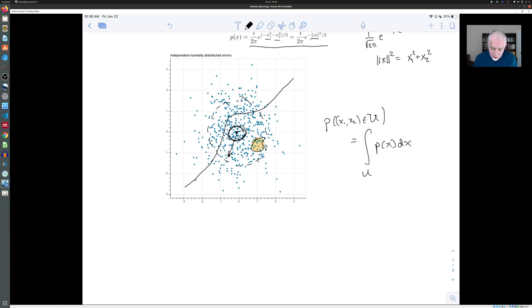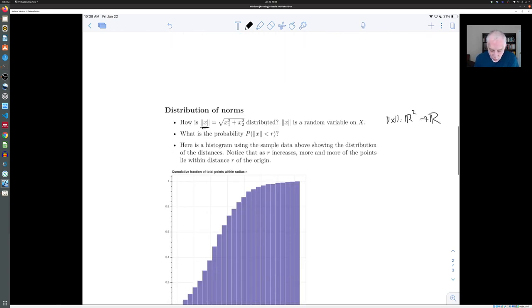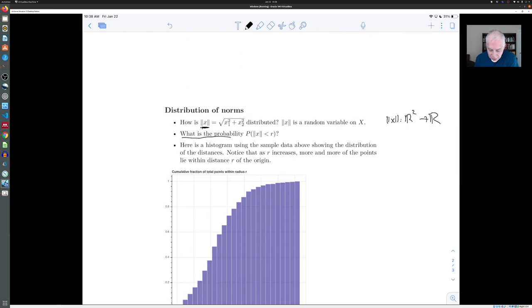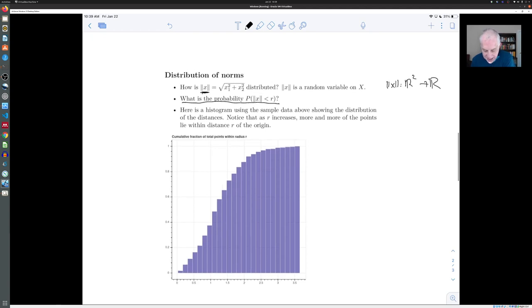And so if we ask the question, what is the probability that the norm of x is less than R? In other words, what is the probability that the random variable norm of x is less than R? We're asking, how likely is the absolute error, the square root of the sum of the squares, less than this number R?